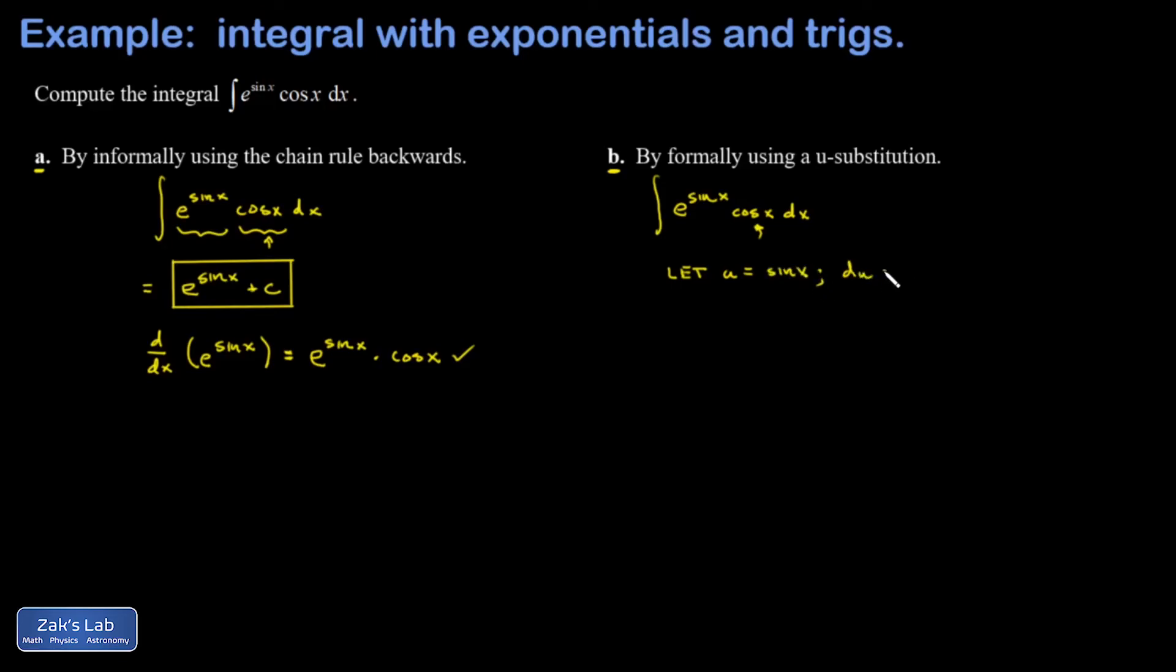Now I need the differential of u. So I take the derivative of sine x times dx, so that's cosine x dx. And now when I look at my original integral, I see u up here, and I see du right next to it.